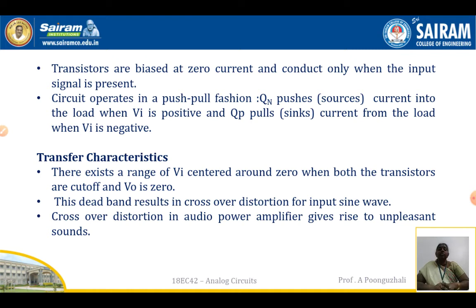Now we look at the transfer characteristics. There exists a range of VI centred around zero where both transistors are cutoff. For an NPN transistor to conduct, the minimum base-emitter junction voltage must be 0.7 volts. If the input is 0 volts, both transistors will not conduct. This creates a dead band, which is called crossover distortion. For both transistors to conduct, a minimum of 0.7 volts is required; if input is less than 0.7 volts, output will be 0. In audio amplifiers, crossover distortion produces an unpleasant sound, which is a disadvantage.